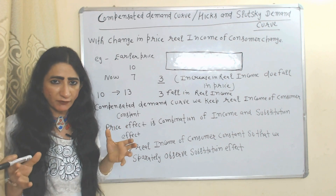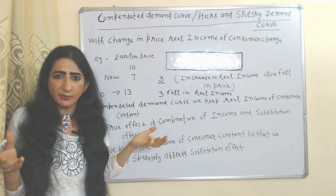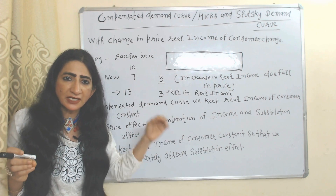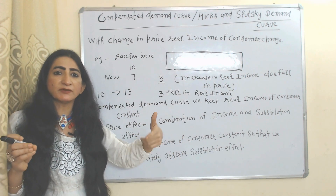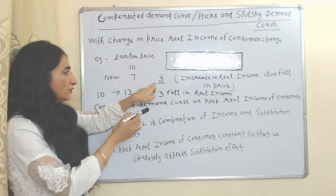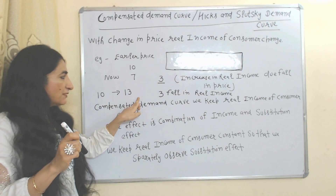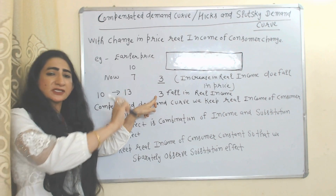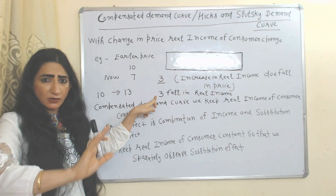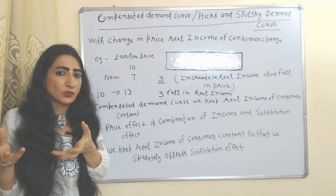In the compensated demand curve, we keep the real income of the consumer constant — the income that changes due to a change in price. When price falls, we take the 3 rupees from the consumer, but when price increases, we give the 3 rupees back to the consumer, so that their real income remains constant.